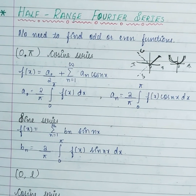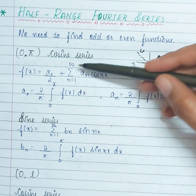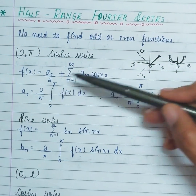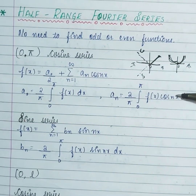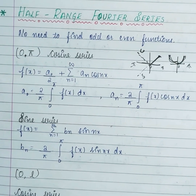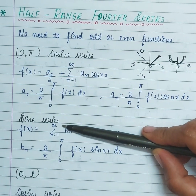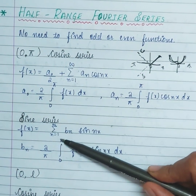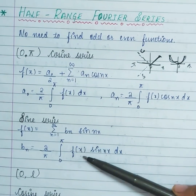We have either 0 to π or 0 to L. For 0 to π, if it's a cosine series there is no BN. We have A0/2 plus summation n=1 to infinity of AN·cos(nx). What is A0? 2/π · integral from 0 to π of f(x) dx. AN is 2/π · integral from 0 to π of f(x)·cos(nx) dx. If they ask you to construct a sine series — sine means odd function — A0 and AN will become 0. f(x) = summation n=1 to infinity of BN·sin(nx), where BN = 2/π · integral from 0 to π of f(x)·sin(nx) dx.